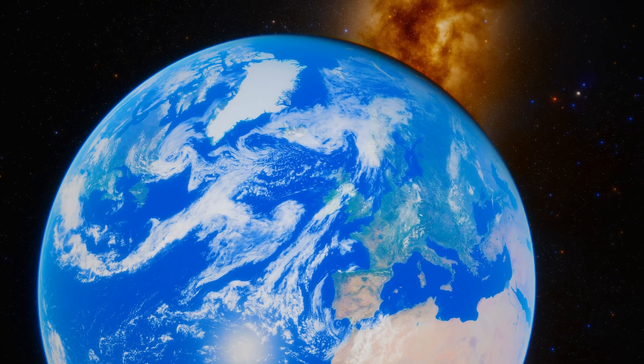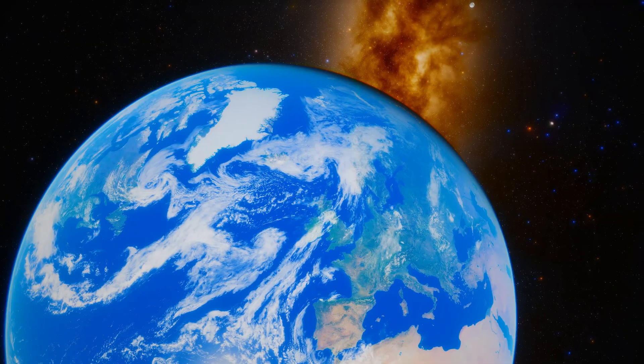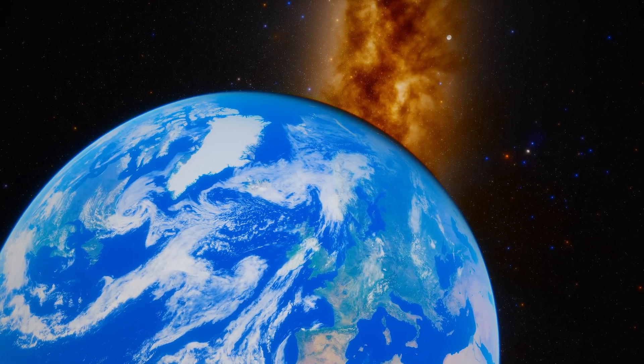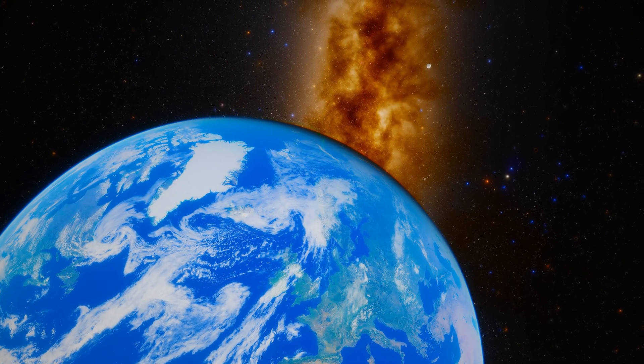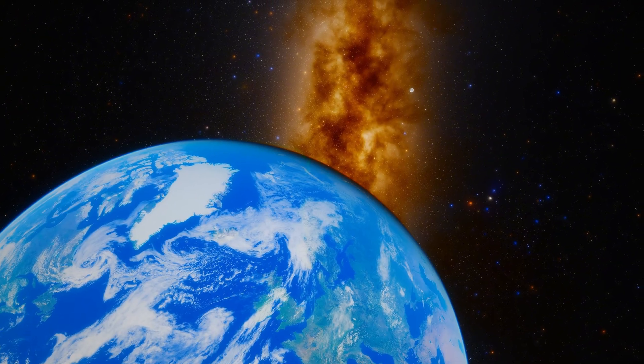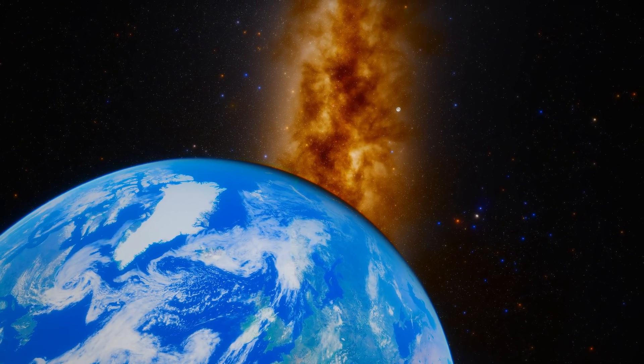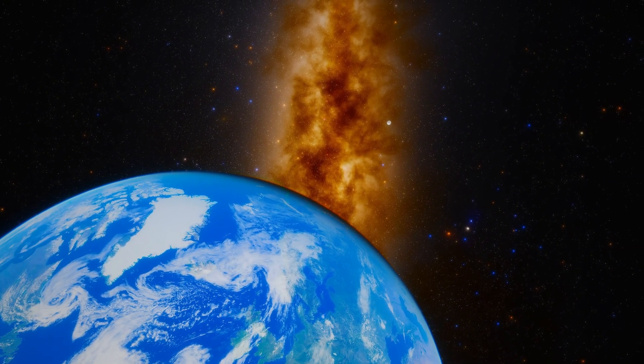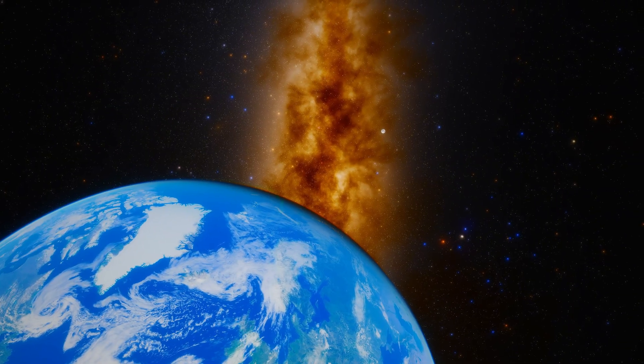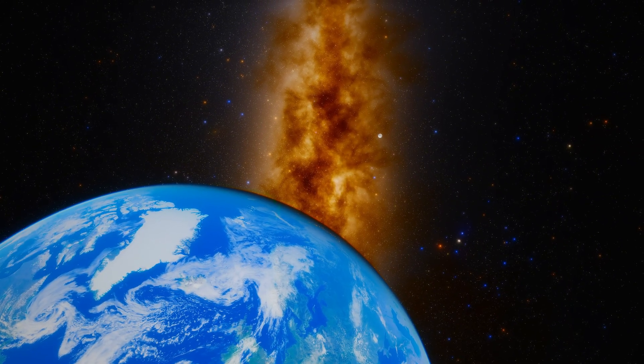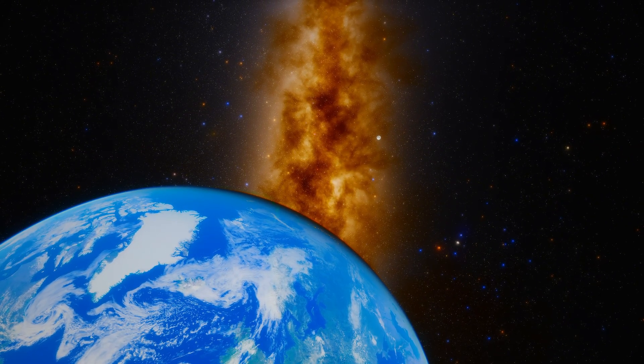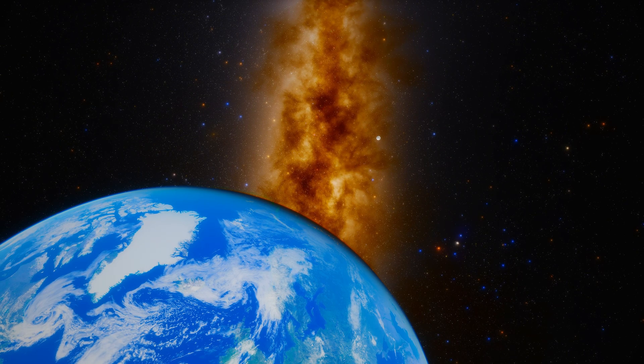It's called Sagittarius A-star, and it weighs over 4 million times the mass of our Sun. That band of orange light rising behind our planet, that's the Milky Way, our home galaxy seen from the inside. And somewhere deep within that glow, hidden behind thick clouds of gas and dust, is our destination.